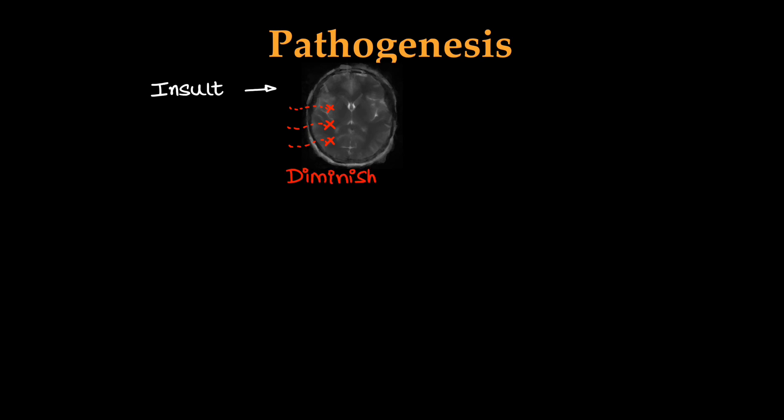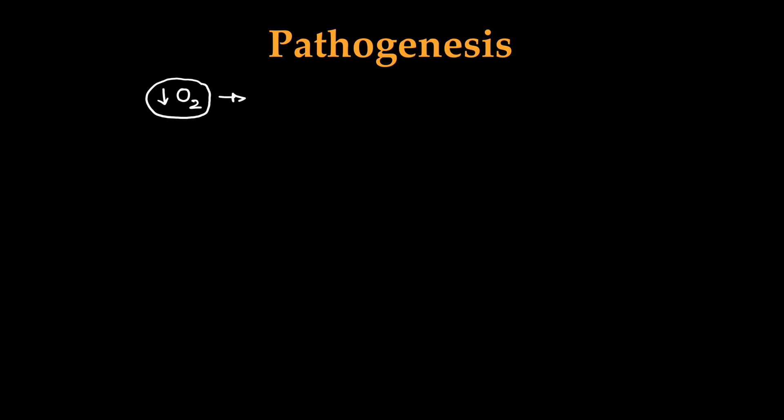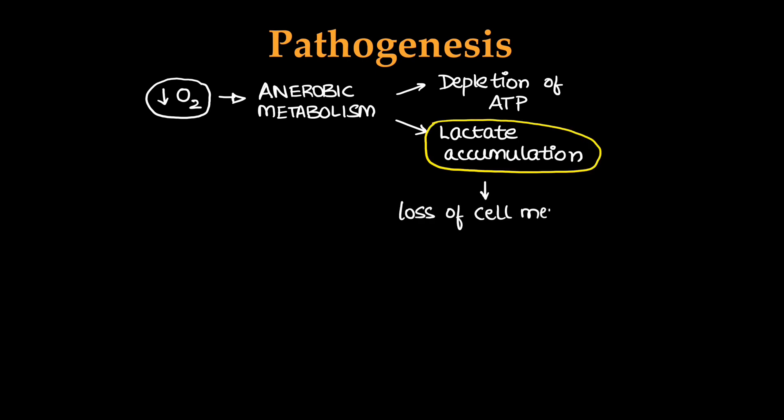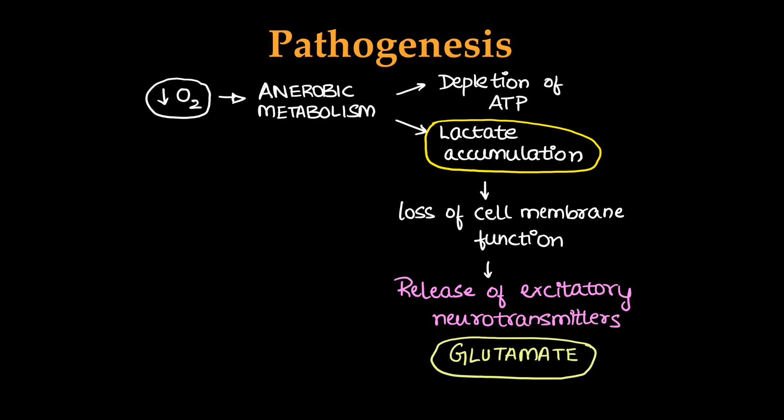Coming to pathogenesis of hypoxic ischemic encephalopathy, there will be a vascular insult that will cause diminished blood flow to the brain which will reduce oxygen. In cases of reduced oxygen, hypoxia, there will be anaerobic metabolism which causes depletion of ATP and accumulation of lactate. This will cause loss of cell membrane function and release of excitatory neurotransmitters like glutamate.